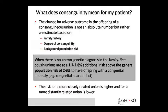If you have a first-degree, second-degree, or third-degree cousin relationship, the closer the cousins, the greater the risk. When there is no specific genetic diagnosis in the family, a first cousin union carries a 1.7 to 2.8% additional risk above the general population risk of 2 to 3% for offspring with congenital anomalies. Congenital heart defects and other conditions can increase, especially in autosomal recessive forms. The risk for a more closely related union is greater than for a distantly related union.